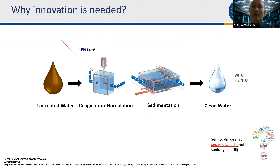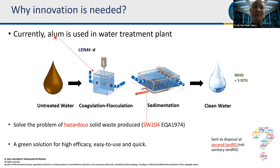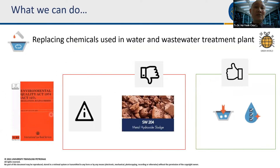What we want to avoid is the dirty sludge going to landfill — specifically, if it contains hazardous components, it must go to a secure hazardous waste landfill. Under Malaysia's Environmental Quality Act, alum sludge is classified as Schedule Waste SW204 — metal hydroxide sludge. This creates cost burdens for water operators and environmental problems. We want to replace alum with a natural-based solution for clean water access and safer operations.